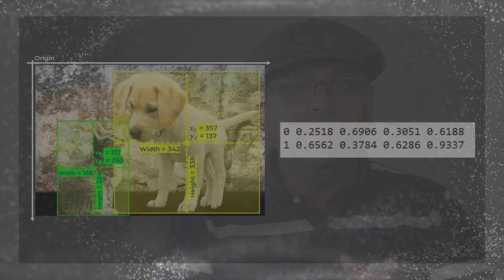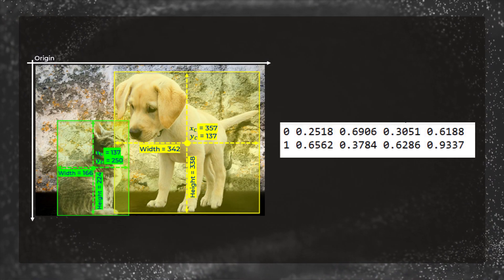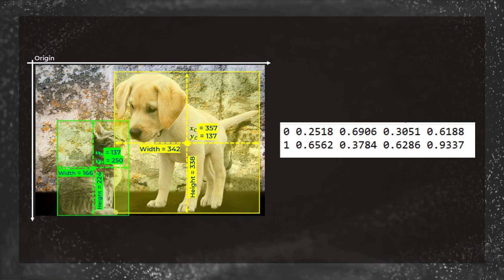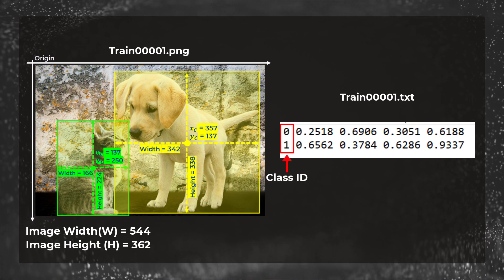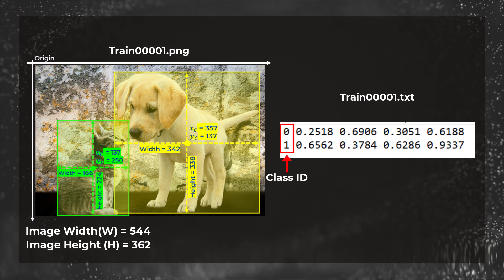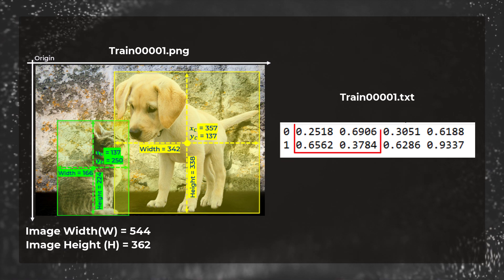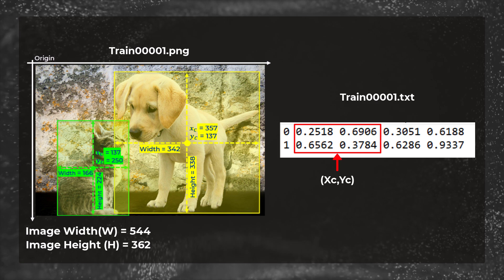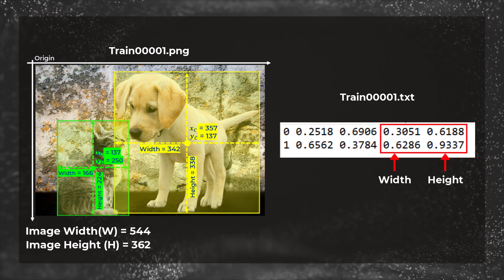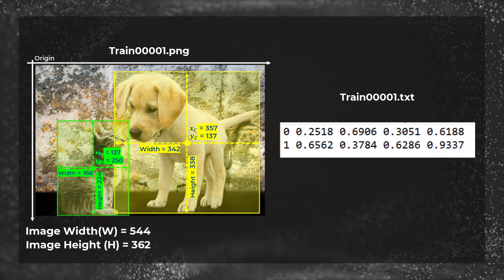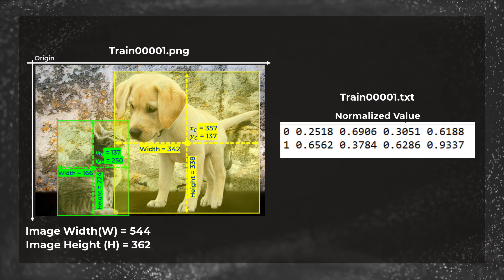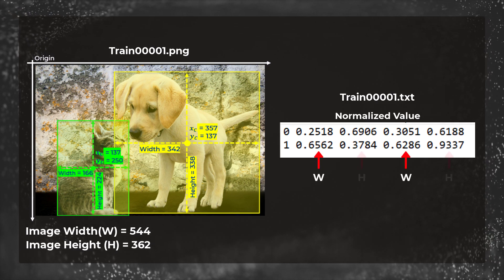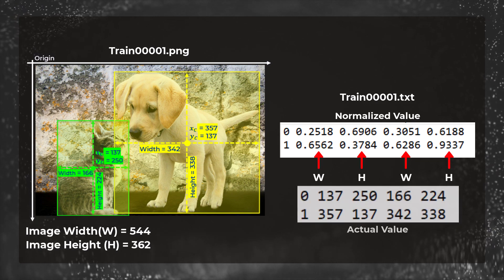Inside this file, we have one row per object in the image. In this example, we have two objects — a cat and a dog — so the file has two rows. Every row has five numbers: the first is the class ID (0 and 1 for cat and dog respectively); the second and third are the object's center coordinates; and the fourth and fifth are the width and height of the object. These numbers are in normalized coordinates. You need to multiply the X coordinate by the image width and the Y coordinate by the image height to get the real image coordinates.